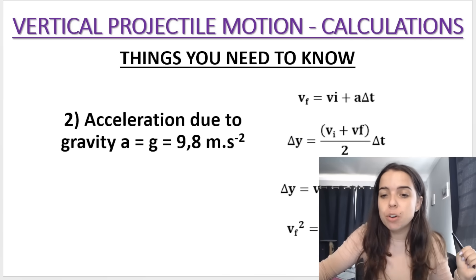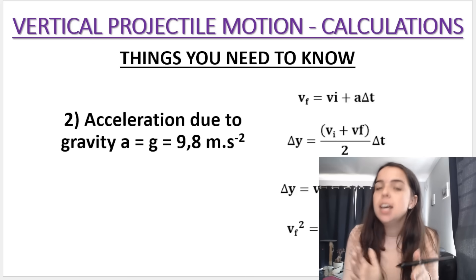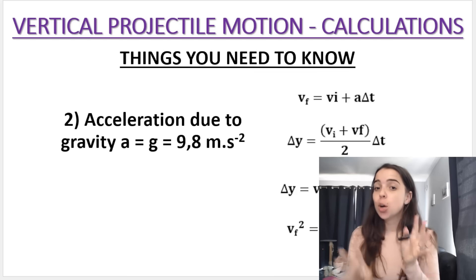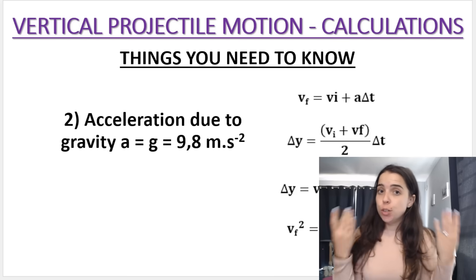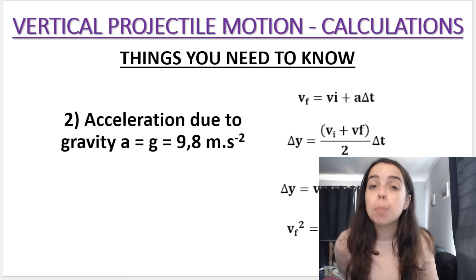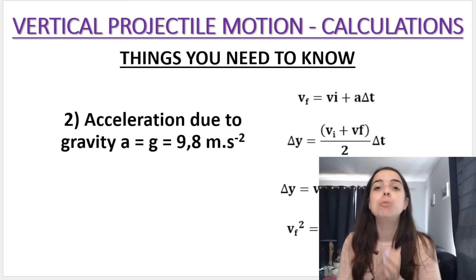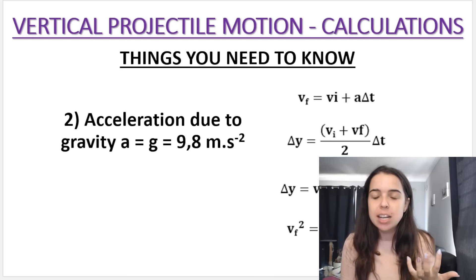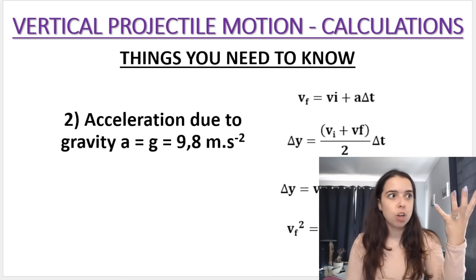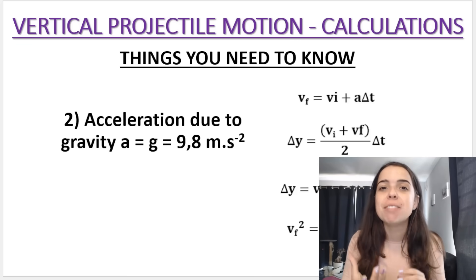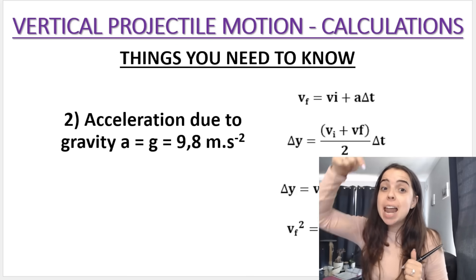The second thing you need to know is that vertical projectile motion involves projectiles, meaning the only force acting on the object is gravitational force. Gravitational force is calculated by taking the mass of the object multiplied by gravitational acceleration g. On Earth, that's 9.8 meters per second squared downwards.